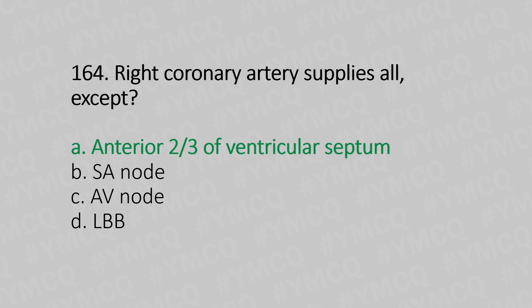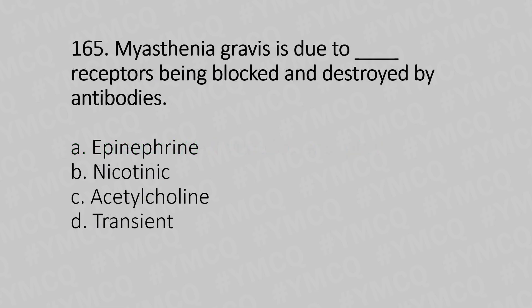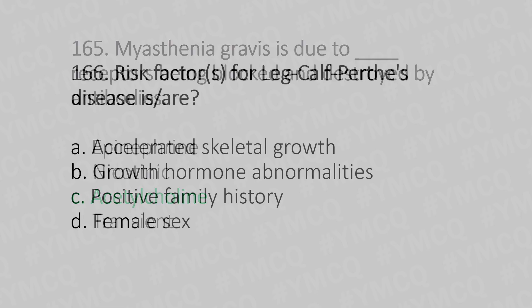Question 165: Myasthenia gravis is due to which receptor being blocked and destroyed by antibodies? Option A: Epinephrine, Option B: Nicotinic, Option C: Acetylcholine, Option D: Transient. And the answer is Option C, Acetylcholine.